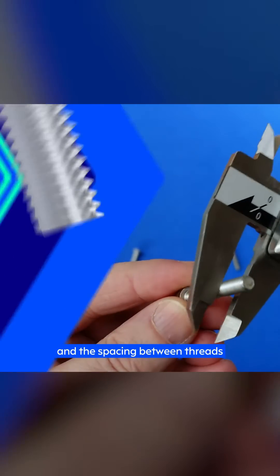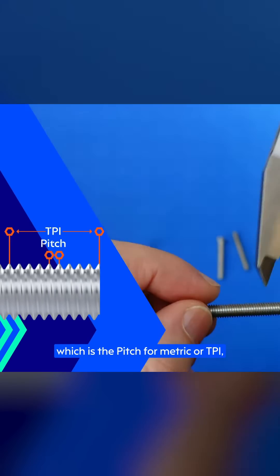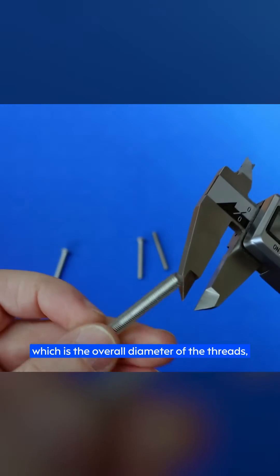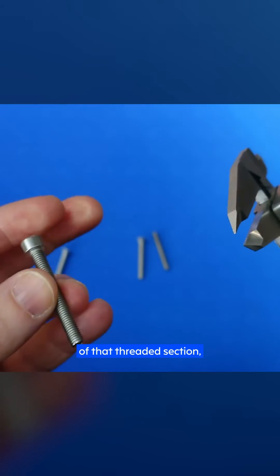There's two key measurements to obtain here to fully understand thread size as a whole. These are the major diameter and the spacing between the threads, which is the pitch for metric or TPI turns per inch for imperial. We'll start with major diameter, which is the overall diameter of threads. Think of it as the maximum width of that threaded section.